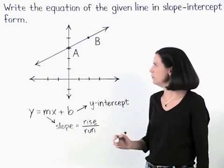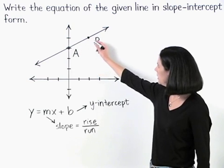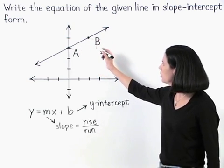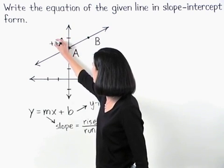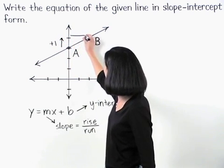And notice that to get from point A to point B along this line, we rise one unit and run two units.